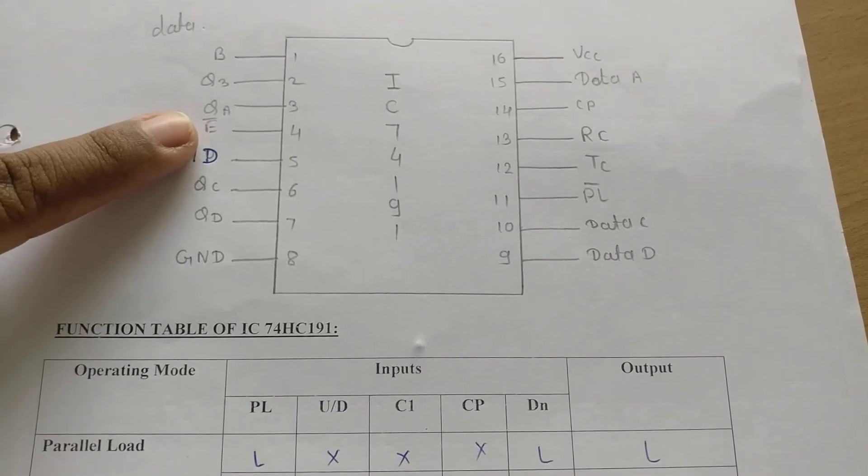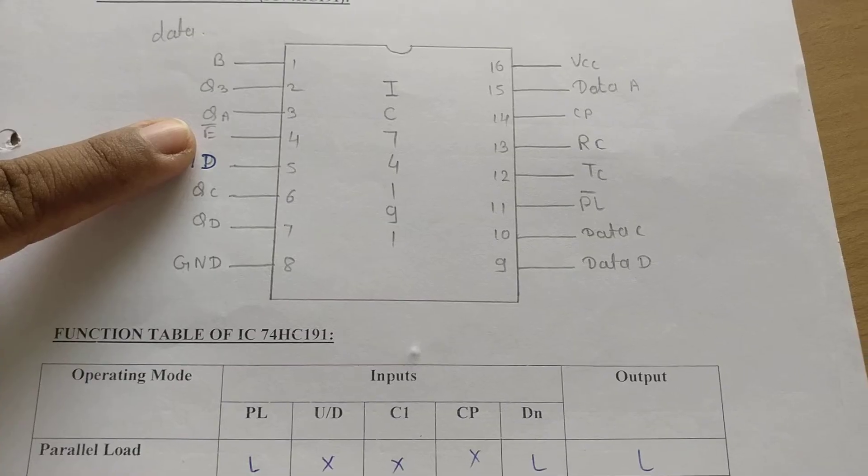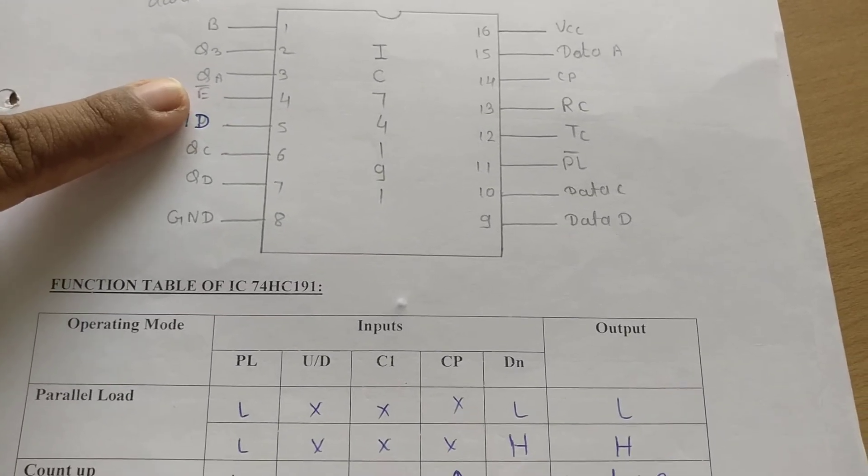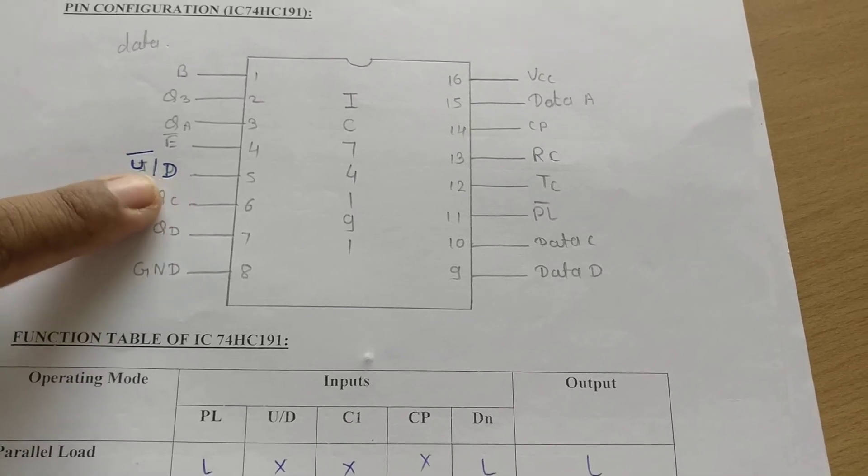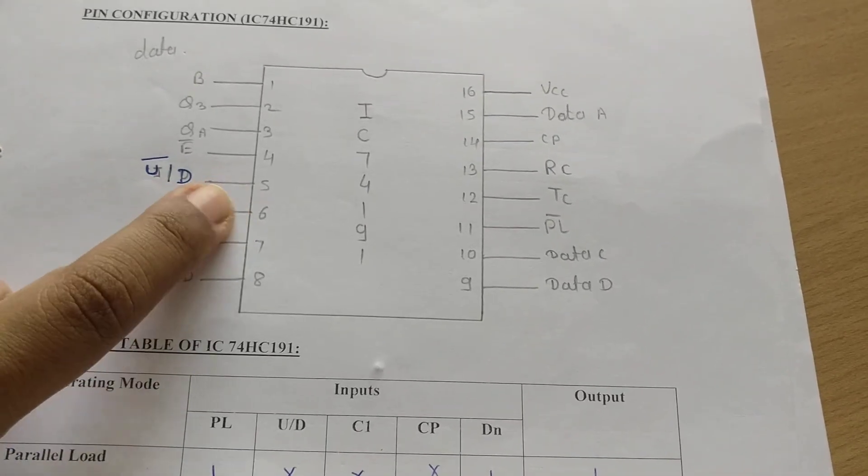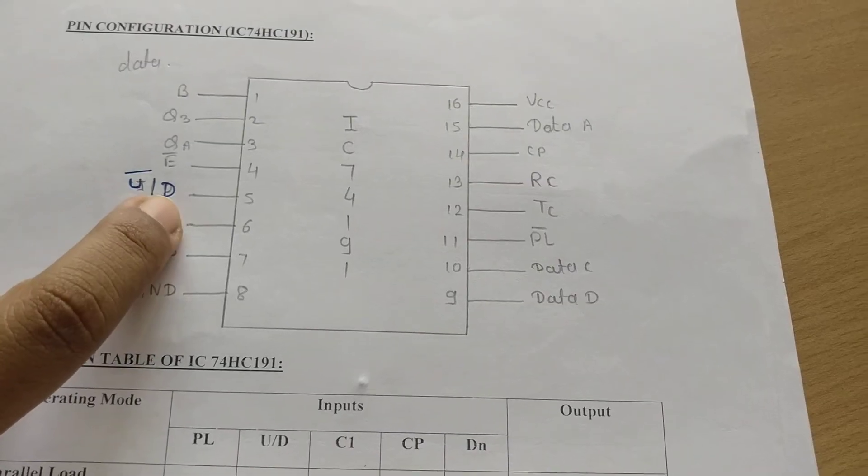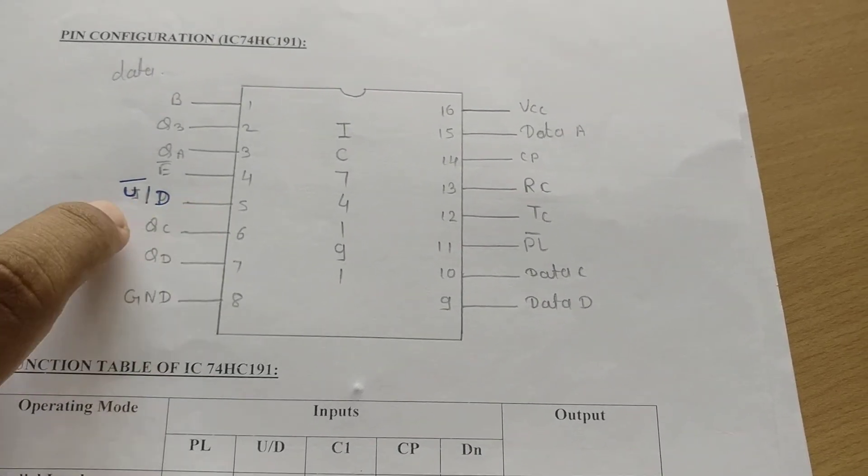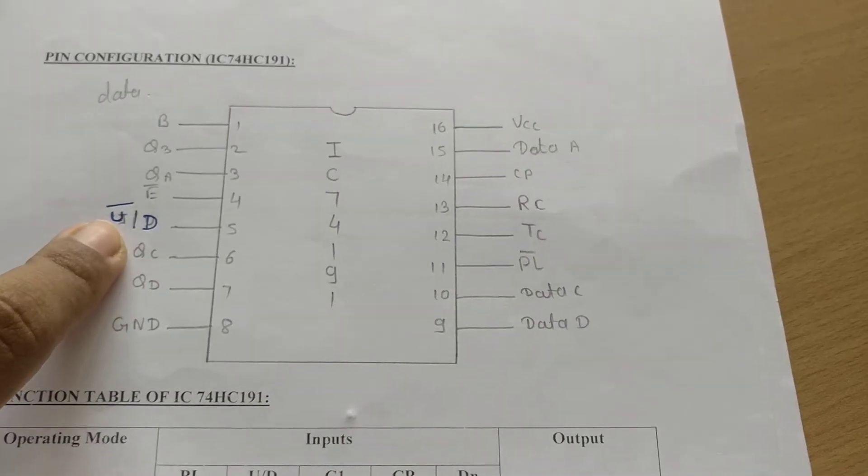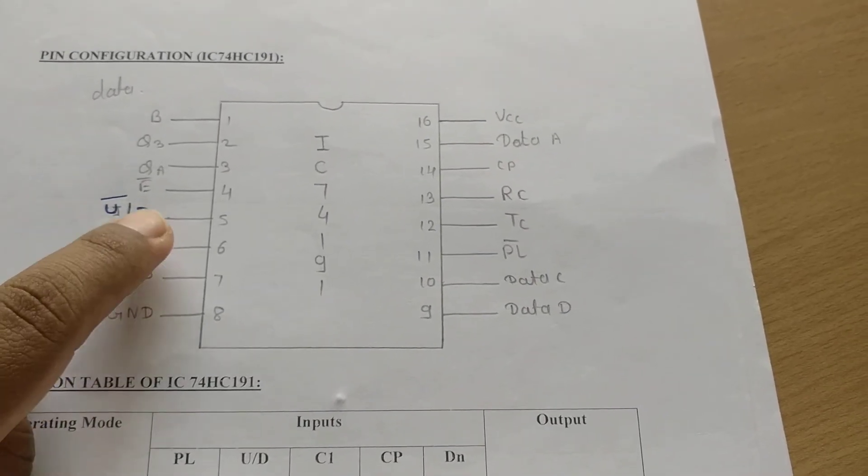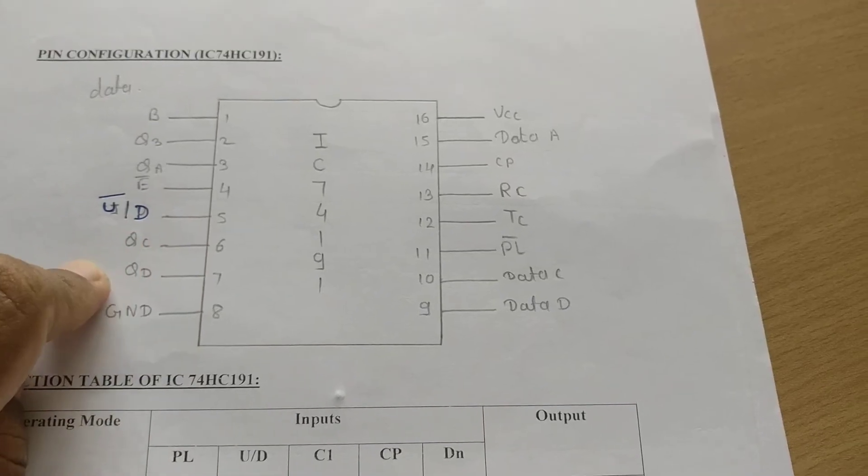Pin number 4 is enable bar. We have to connect pin number 4 to ground to make this IC work. Pin number 5 is up-bar/down. This IC will work as an up counter when pin 5 is connected to ground, and it will work as a down counter when pin number 5 is connected to VCC.